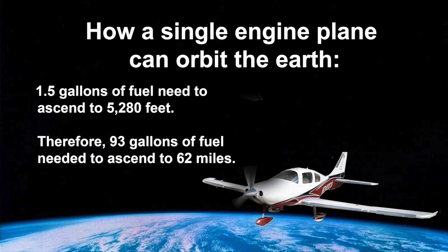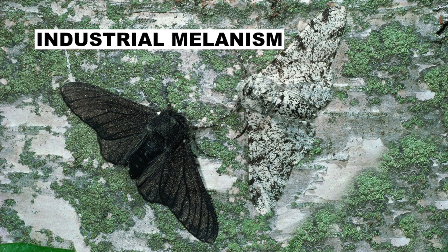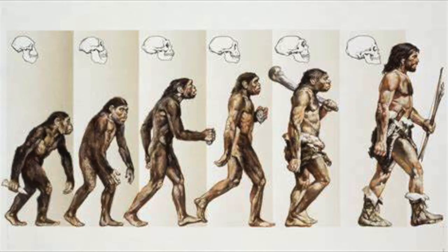Yet this is the identical kind of logic used in university classrooms to teach evolutionary biology. For example, we know that natural selection favored the survival of dark moths over light moths during the Industrial Revolution. Therefore, we know that evolution is true. Therefore, we know how humans evolved from apes through millions of mutations over millions of years.